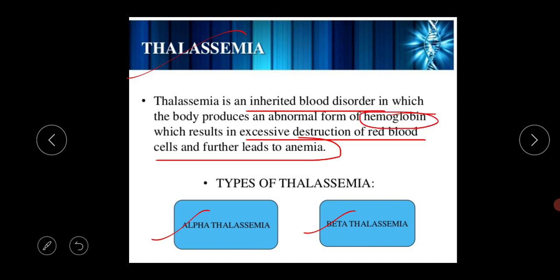Hemoglobin is one kind of quaternary protein. Protein structure has four types: primary, secondary, tertiary, and quaternary structure. Hemoglobin is a quaternary structure protein and has two types of chains — one is the alpha chain and the other is the beta chain. So it has two alpha chains and two beta chains, meaning there are a total of four hemoglobin polypeptide chains.